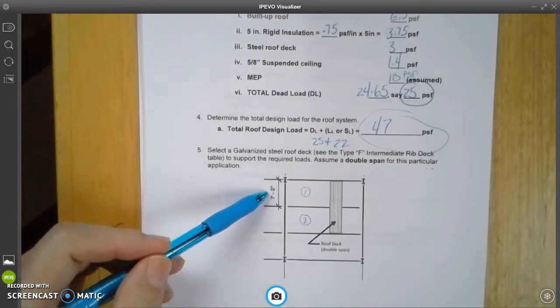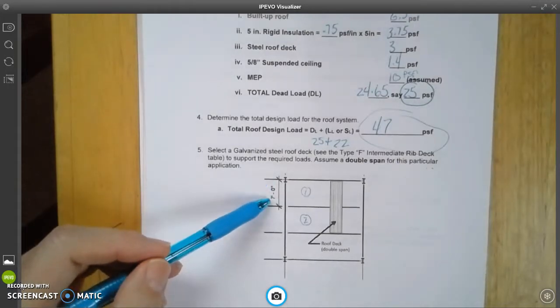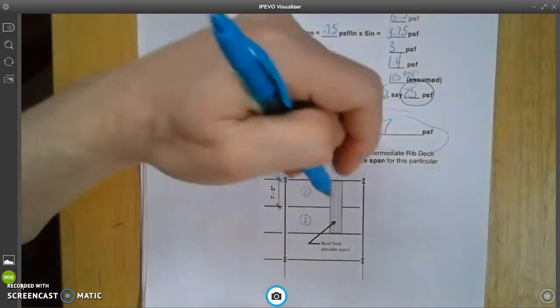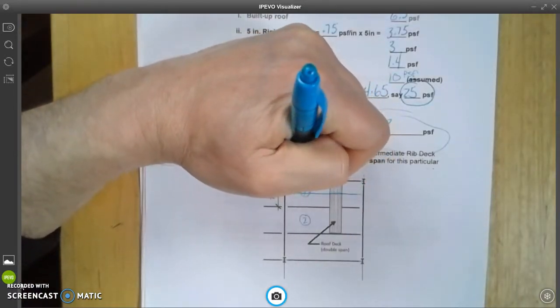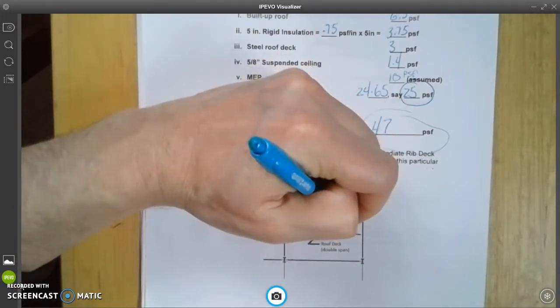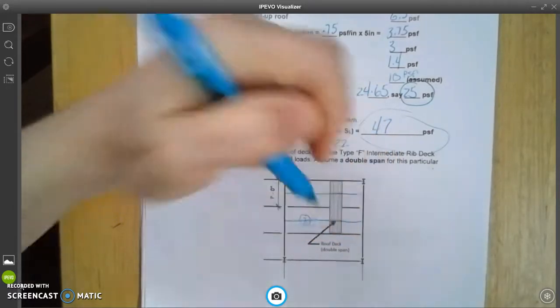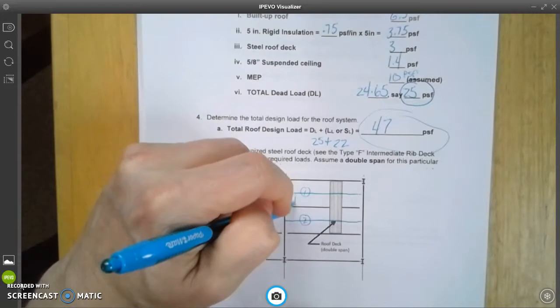We have a 7 foot 0 inch span from here to here, and as we know, that means this is going to be our tributary area from here to here.